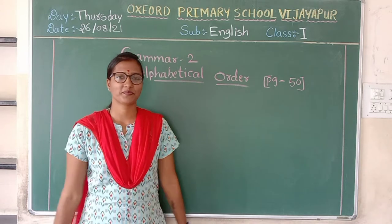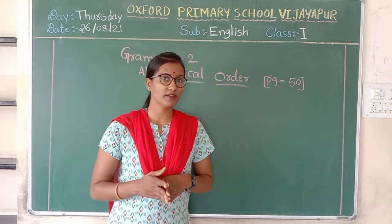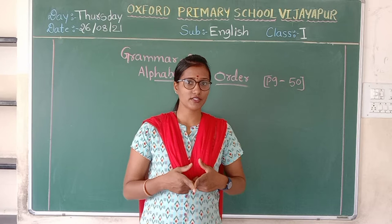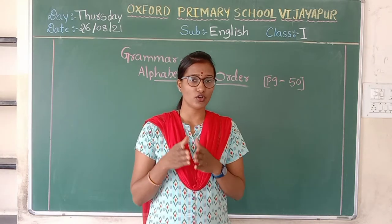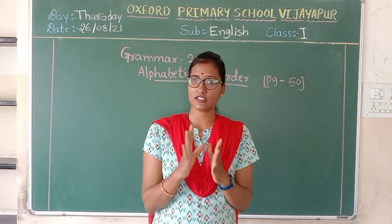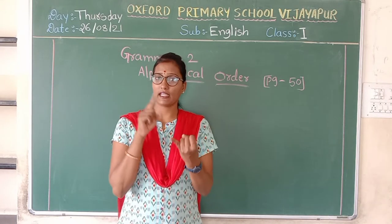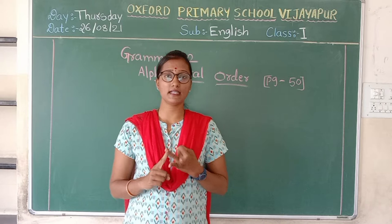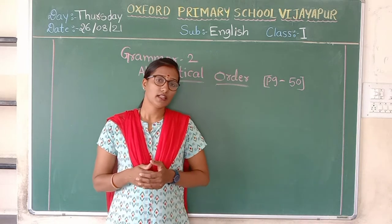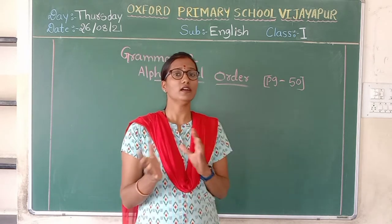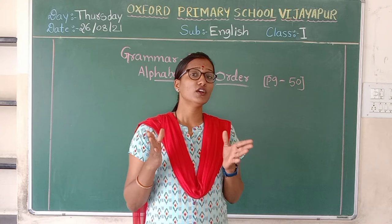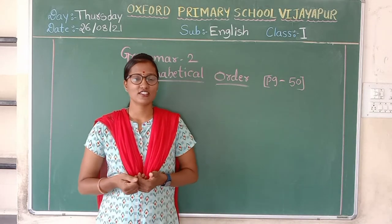Good morning, kids. We have already completed the grammar on alphabetical order, right? Did you all understand about alphabetical order? So this is just one small trick: you have to write capital letters and small letters A to Z — the capital form and the small letter form. Then you can arrange the letters or words in alphabetical order. So we already completed that in our notebook. So today what will we do?